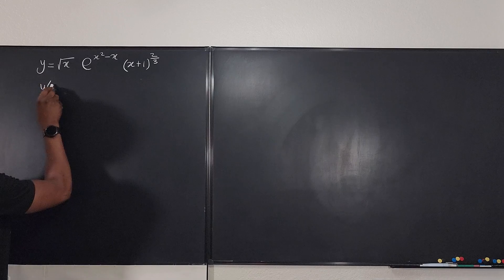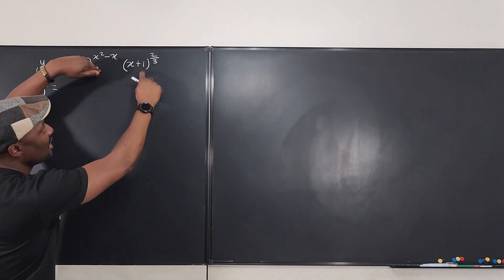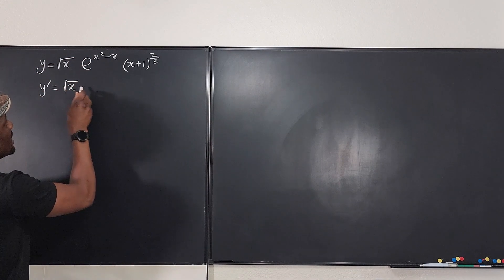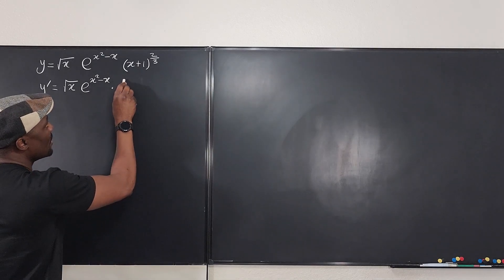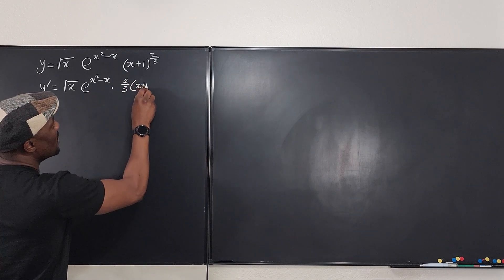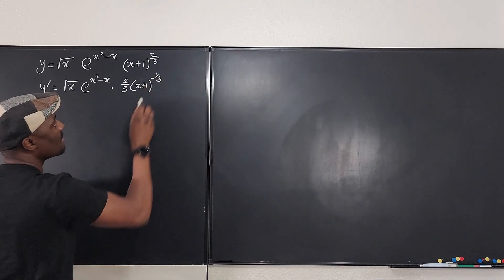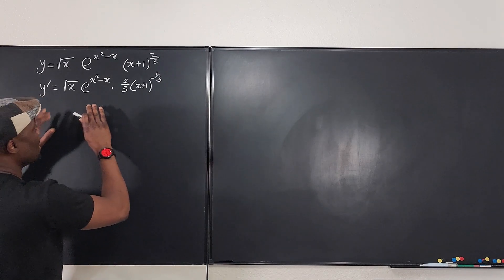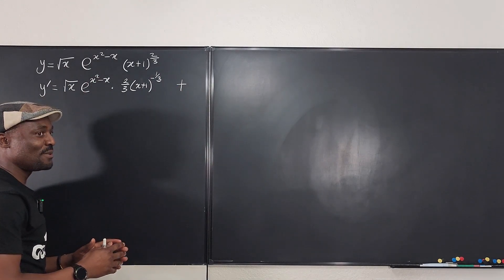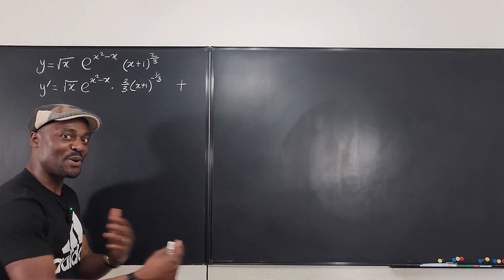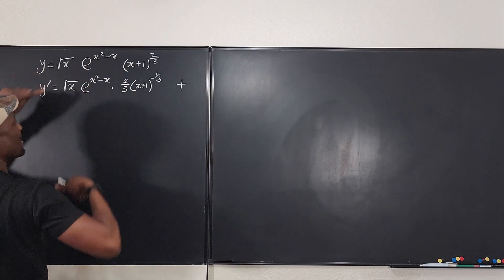Let me show you the differentiation using the product rule. We're going to say that y prime is equal to — we're going to keep the first two and call them the first, then differentiate the second. So it's going to be the square root of x times e to the x squared minus x, then we're going to differentiate the next one, which is two-thirds of x plus one raised to two-thirds minus one, which is negative one-third. We've kept the first and differentiated the second. Plus, we're going to do the second one now — keep the first, but now change what the first is.